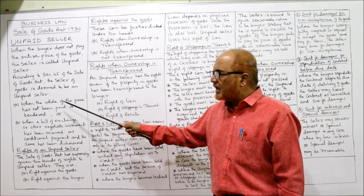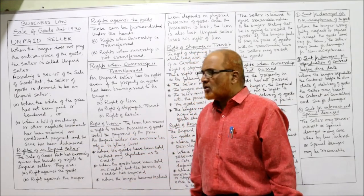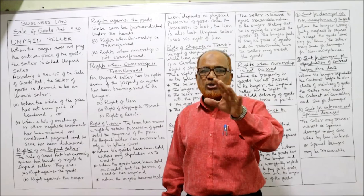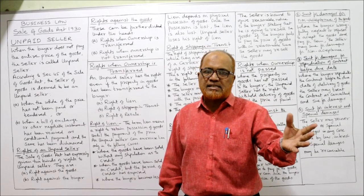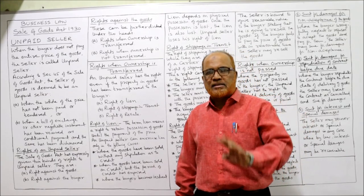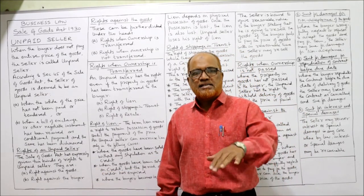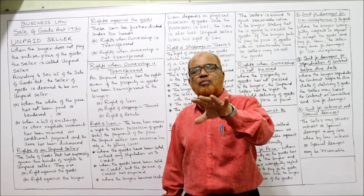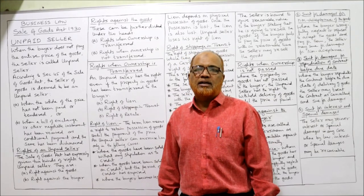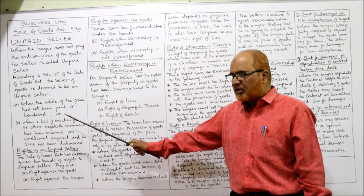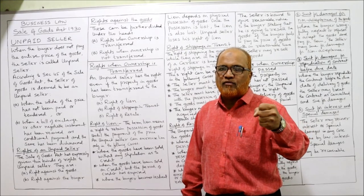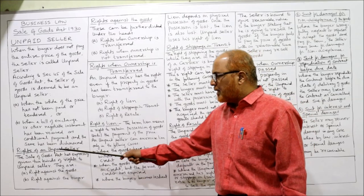So these two cases make the seller an unpaid seller. Now, rights of an unpaid seller. The Sale of Goods Act has expressly given two kinds of rights to the unpaid seller. The first right is right against the goods. The second is right against the buyer, personally. If I am the unpaid seller, the law has given me these two rights: right against the goods sold, and right against the buyer.